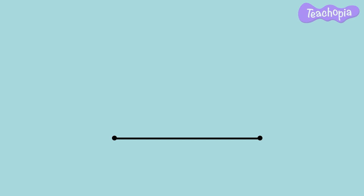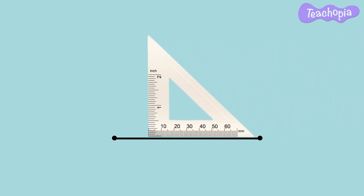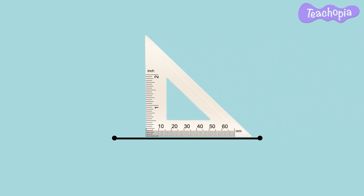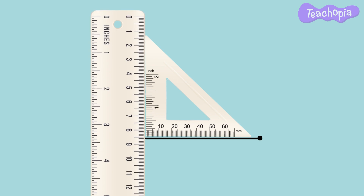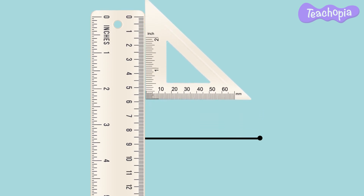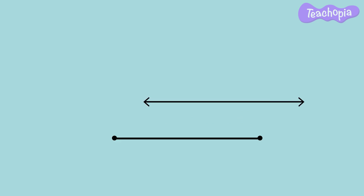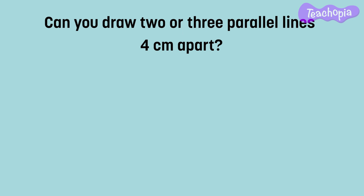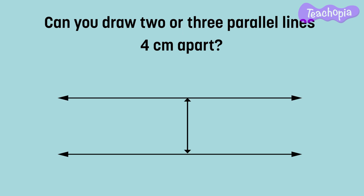Using the scale and the set square we can also draw parallel lines. Place the set square along the line segment, then place the scale along the other edge of the set square. Move the set square along the scale, and using the set square you can draw parallel lines to the given line. Can you draw two or three parallel lines four centimeters apart?